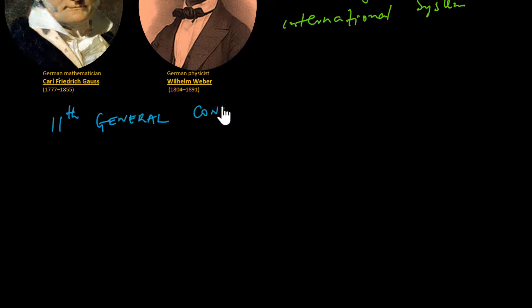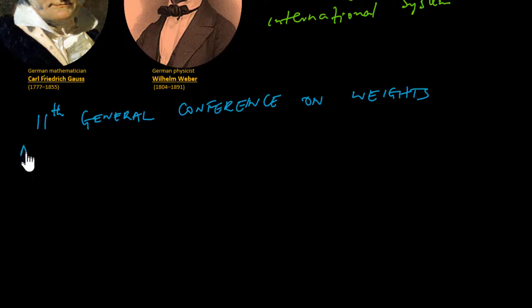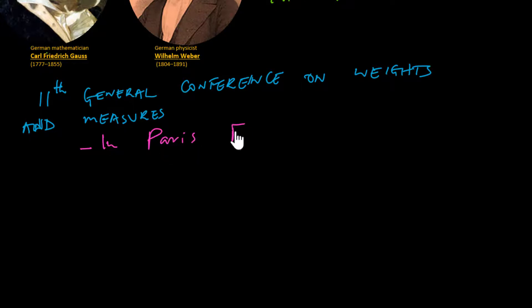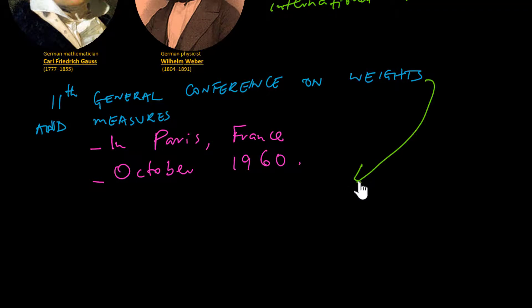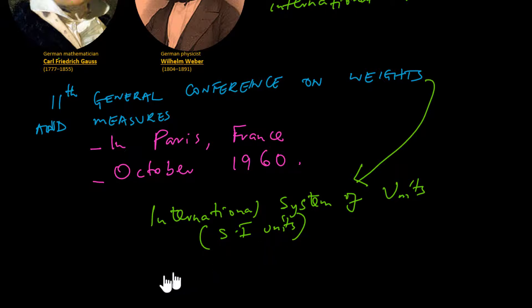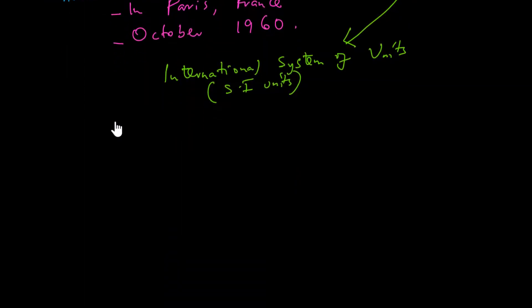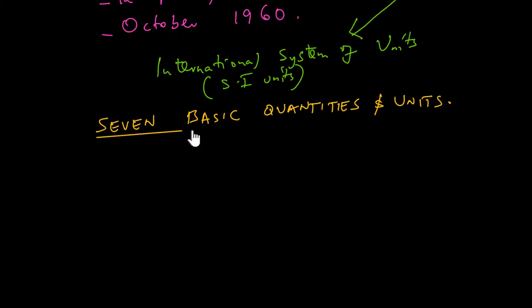The 11th General Conference on Weights and Measures that took place in Paris, France in October 1960 brought together many international organizations to establish the definitions and standards of a new system and to standardize the rules for writing and presenting measurements. This conference gave birth to the International System of Units, abbreviated as SI by international convention. The seven basic units that were agreed upon in 1960 are as follows.